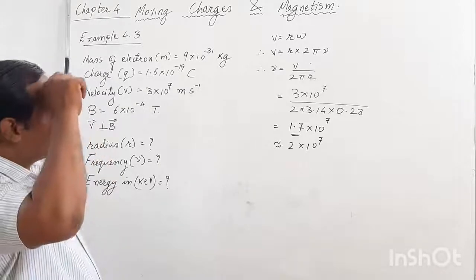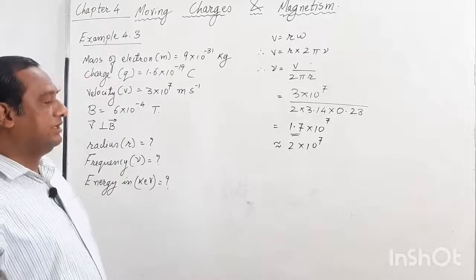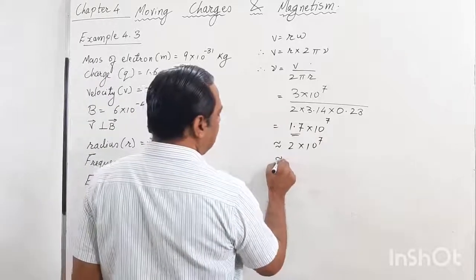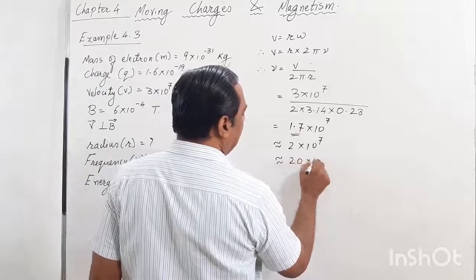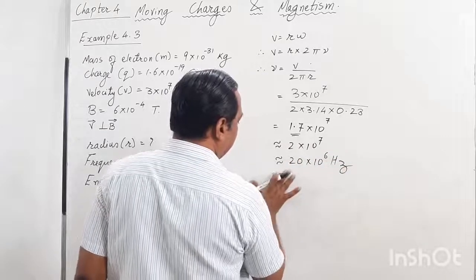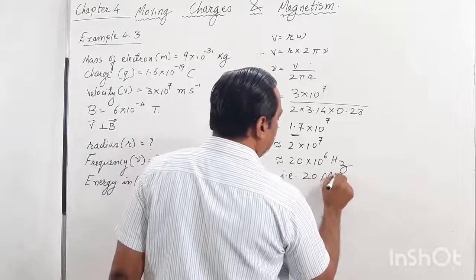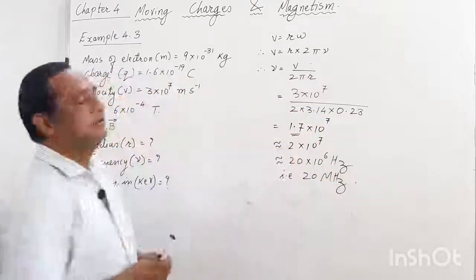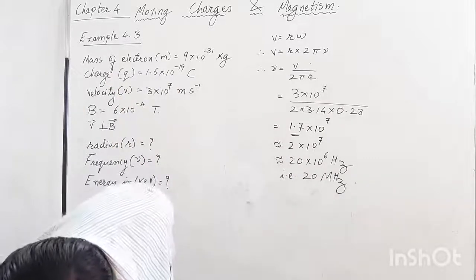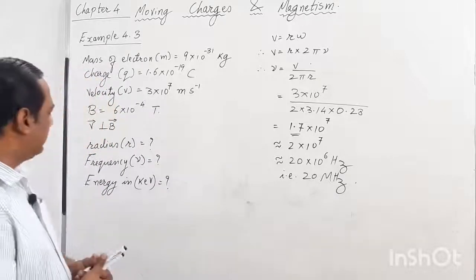This is approximately 2×10⁷ hertz, which can be written as 20×10⁶ hertz or 20 megahertz. So this is the frequency of the particle. I wonder why they have written 2 megahertz in the book. 20 megahertz is what we are getting.